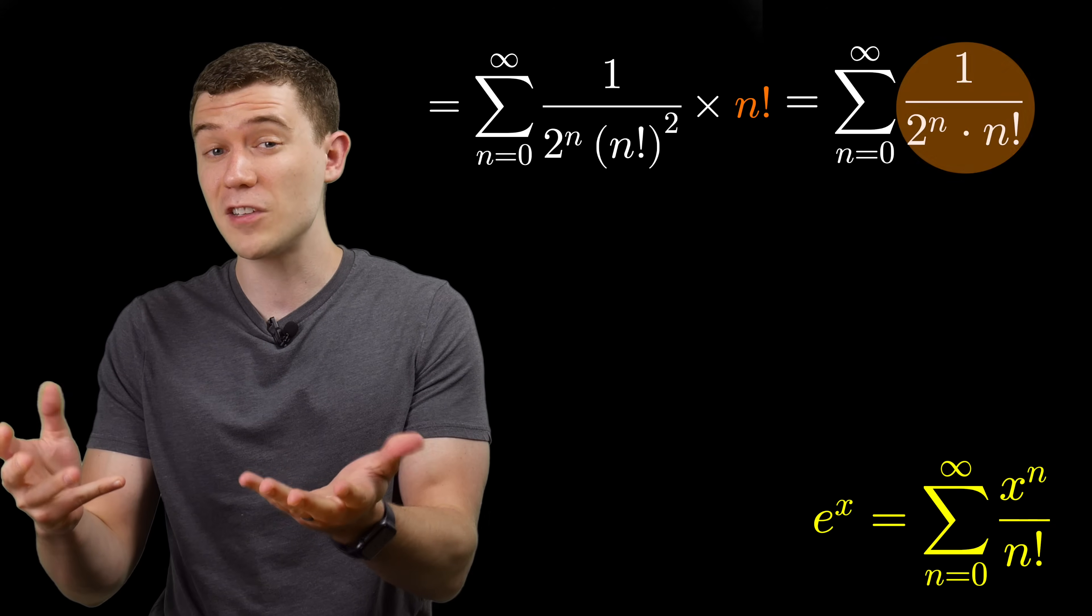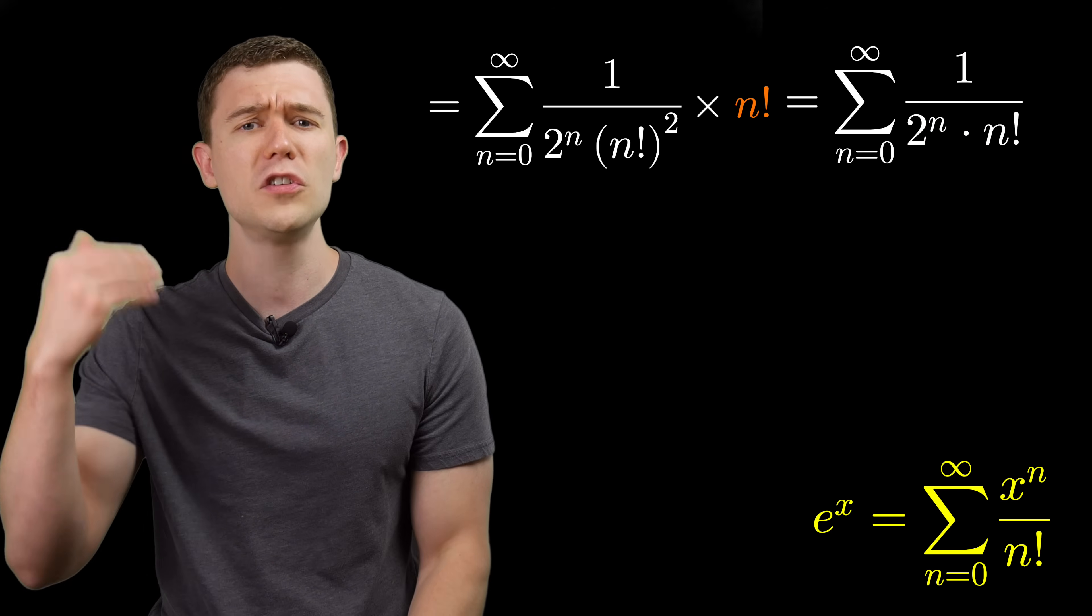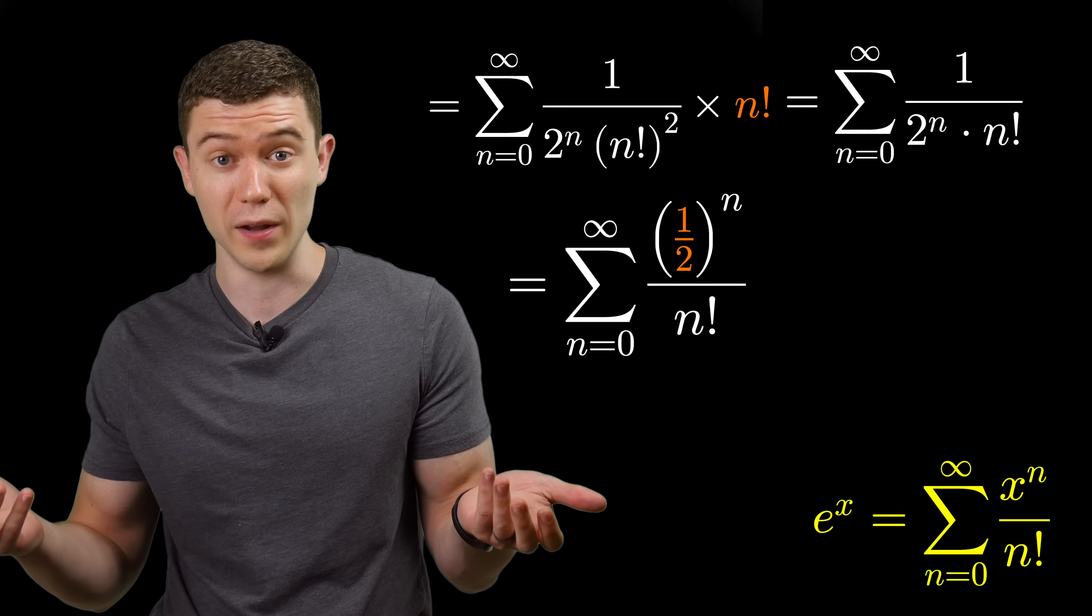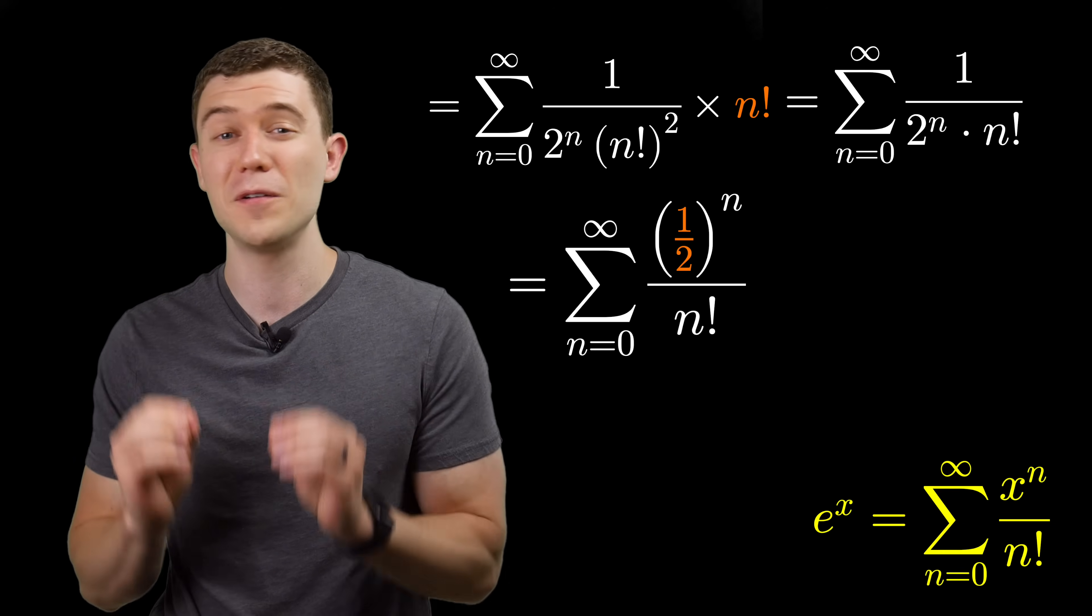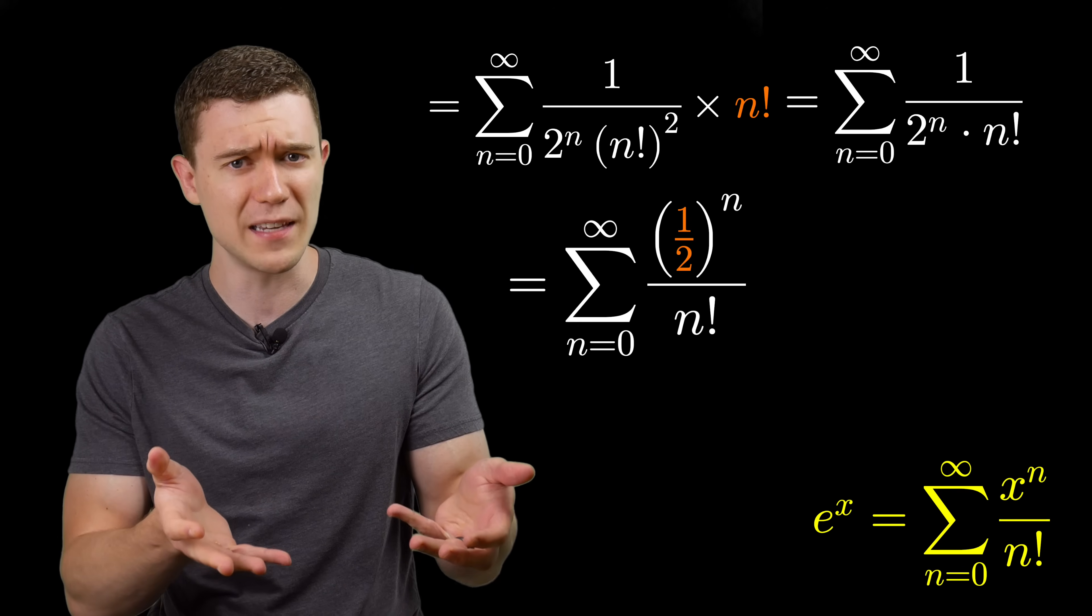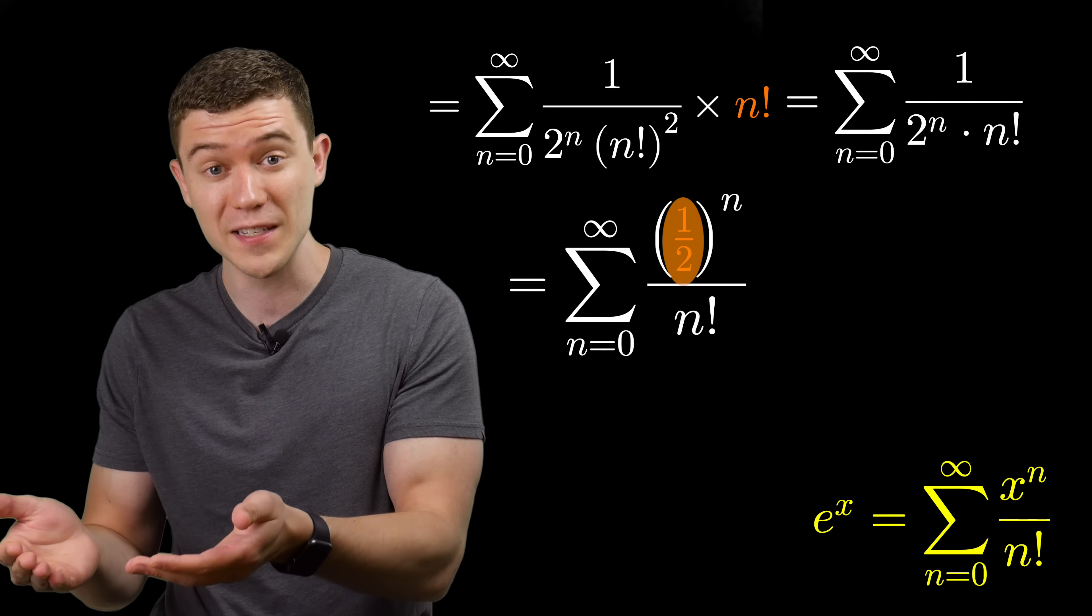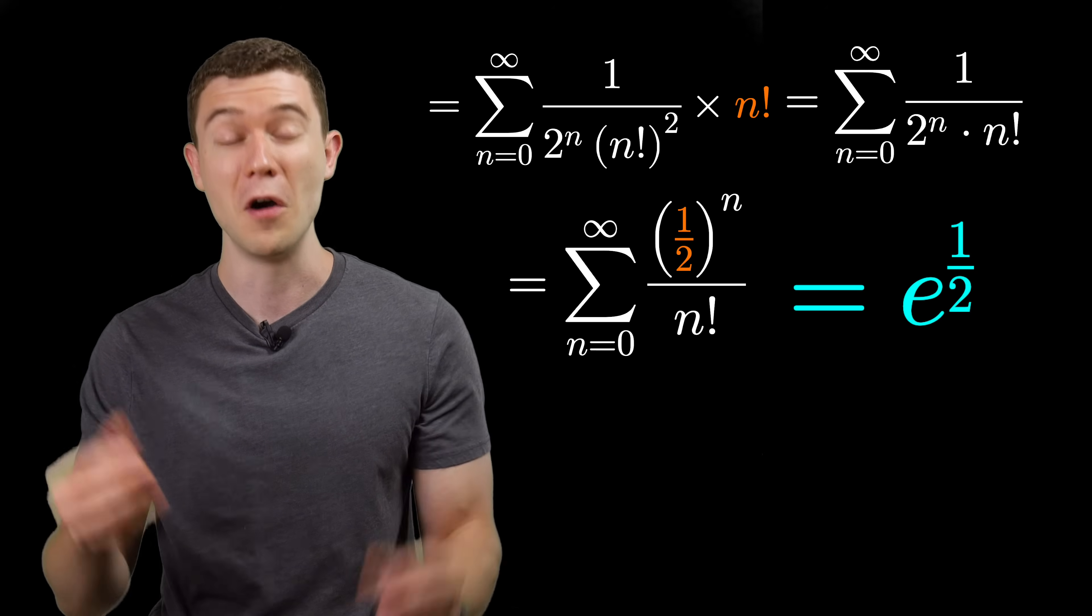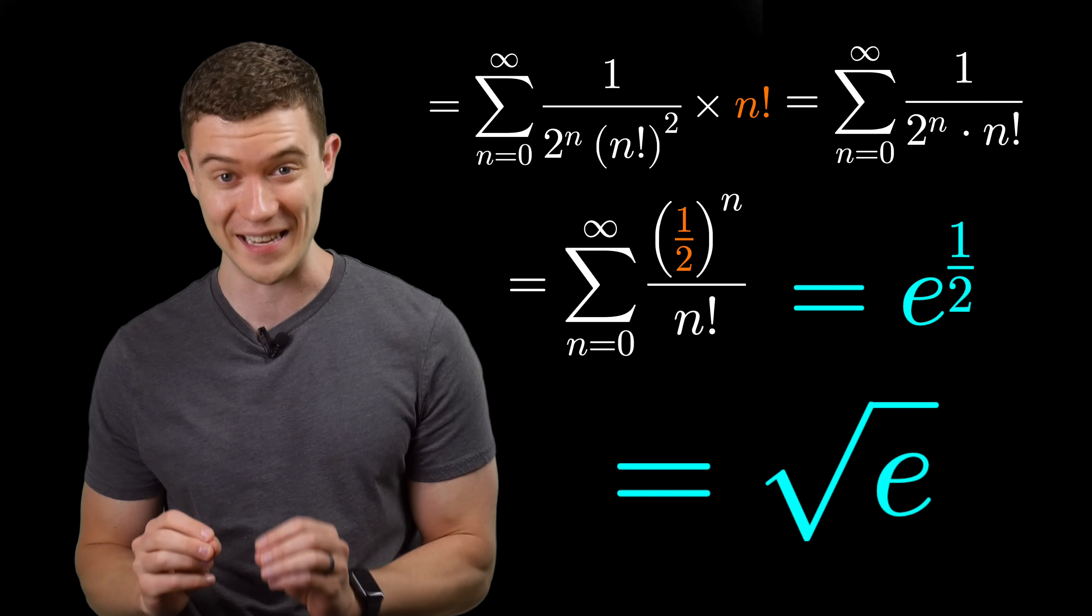That's pretty similar to what we have here. Keep the n factorial in the denominator, bring the 2 to the n in the numerator. 1 to the n is simply 1. And this is exactly the power series representation of e to the x again. It's just we don't have x substituted in, we have 1 half substituted in. And this sum exactly equals e to the 1 half or the square root of e.